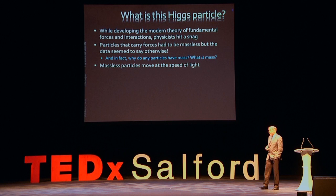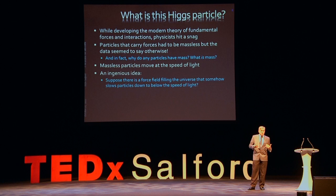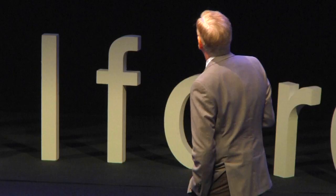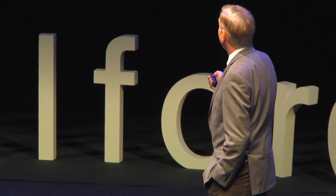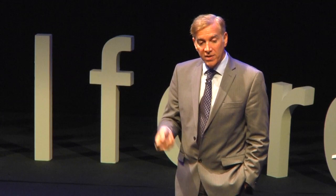Massless particles move at the speed of light. Theorists came up with an ingenious idea: suppose there's a force field that fills the universe that somehow slows particles down to below the speed of light — that would effectively give them mass. You have this field that fills the universe, and as particles pass through it, they get kind of caught up in it, some more than others. That's how they become massive — they basically get slowed down. And that's what the Higgs field is.